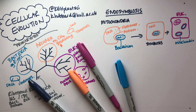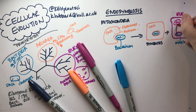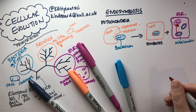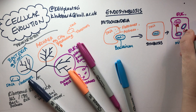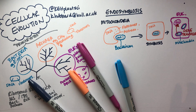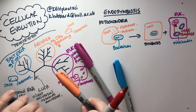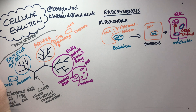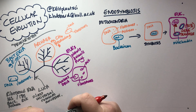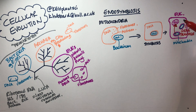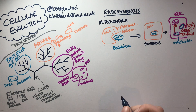Over evolutionary time, genes have migrated from the mitochondrion to the nucleus. If you look in your own nuclear genome — in your chromosomes — you will find genes that used to be in the bacteria that became the mitochondrion. Around 90% of the genes that used to be in the mitochondria are now in the nucleus, and those proteins have to be re-imported back into the mitochondria.